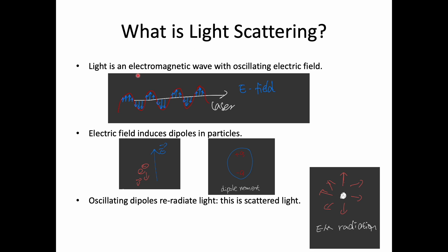Light, as we know, is an electromagnetic wave — it has a magnetic component and also an electric field component. The electric field will cause the electrons in the particles to move. The electrons move in the opposite direction to the E field, and when they move, it induces a separation of charges within the particles, creating a so-called dipole moment.